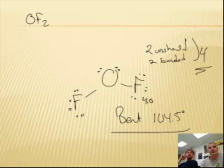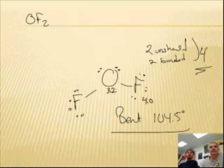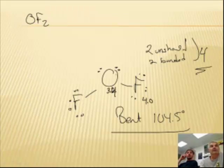OF2. Well, F we just termed as 4.0, and this is 3.2. We're starting to do this from memory. Oh, it's 3.4. So the difference is 0.6, so it's polar.